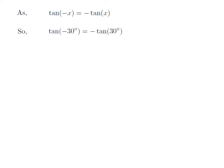Let us apply the above identity for tangent of minus 30 degrees. Here, x is 30 degrees. So tangent of minus 30 degrees is equal to minus tangent of 30 degrees.